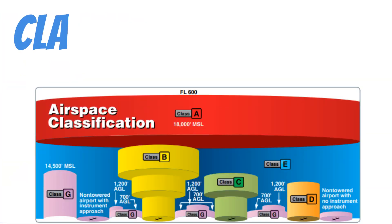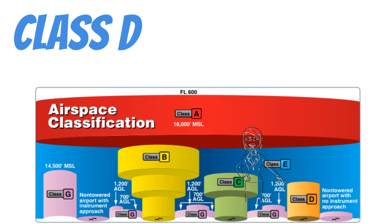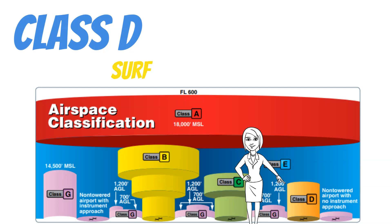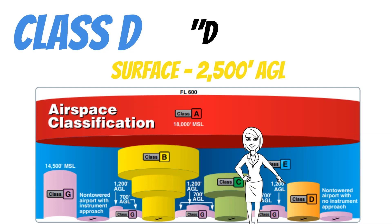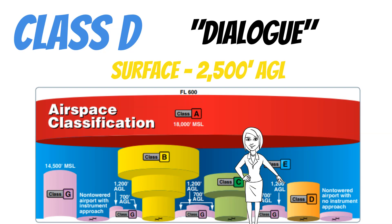Next up, we have Delta airspace. Typically, Class Delta airspace is shaped like a cylinder. It's usually 5 miles in diameter and it surrounds smaller, towered airfields. This airspace starts at the surface and goes up to 2,500 feet AGL. The D here stands for dialogue, because we need to talk to their tower before we can enter their airspace.